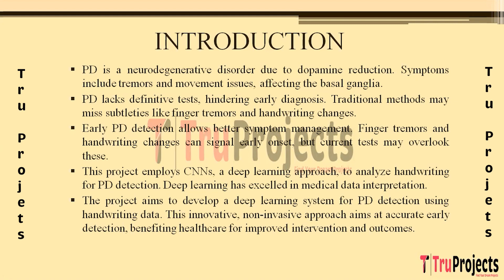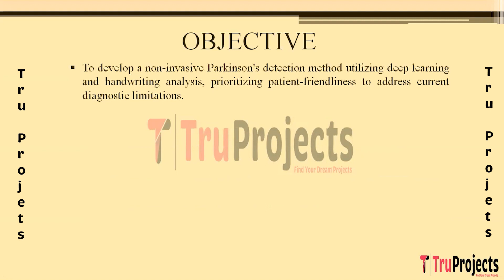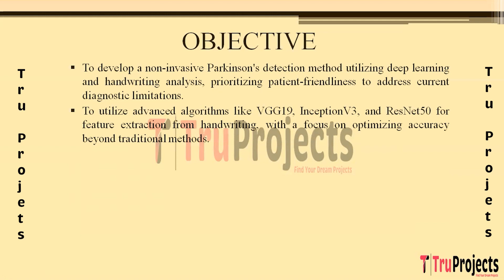This innovative approach has the potential to revolutionize Parkinson's disease detection, providing a non-invasive and efficient method beneficial in healthcare for early intervention and improved patient outcomes. The project incorporates deep learning and handwriting analysis to overcome current diagnostic limitations, ensuring a user-friendly approach. Cutting-edge algorithms such as VGG-19, Inception-V3, and ResNet-50 are utilized to extract features from handwriting, with the primary focus on optimizing accuracy beyond traditional methods.